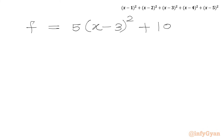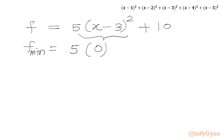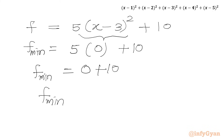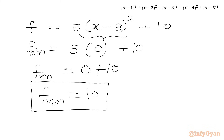For real x, a square is always non-negative, so the minimum value of (x-3)² is 0. Therefore f minimum = 5(0) + 10 = 10. Using this expansion method we can easily find the minimum value of the function.